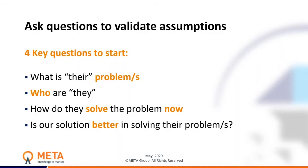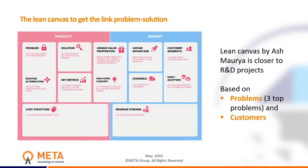The four key questions are: What is the problem our potential customers are going to solve? Who are they — and this is why it's very important to focus on early adopters, because we can ask them and validate with them. How do they solve the problem now? And then, how is our solution going to solve their problem much better than they're doing now? This is also essentially defining innovation. The thing that brings all this together and allows us to focus is the Lean Canvas.